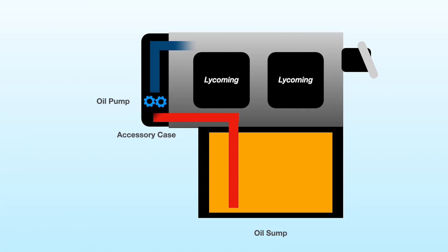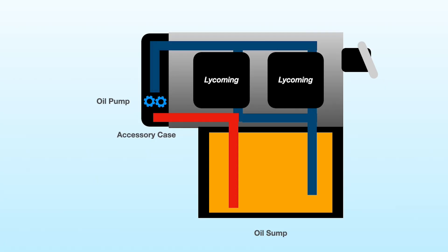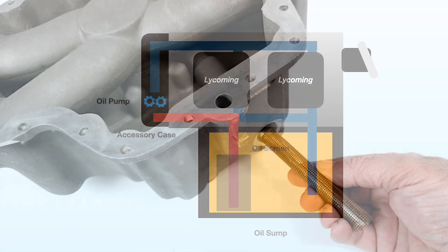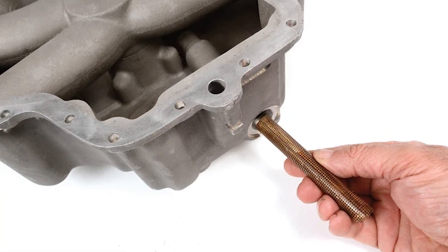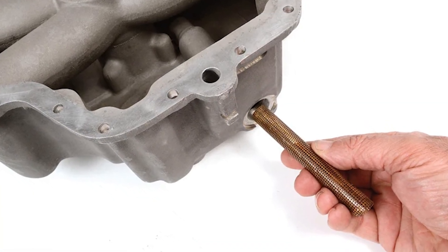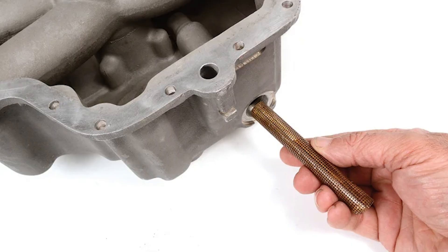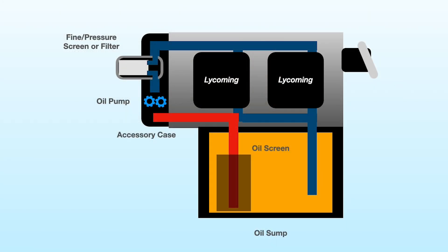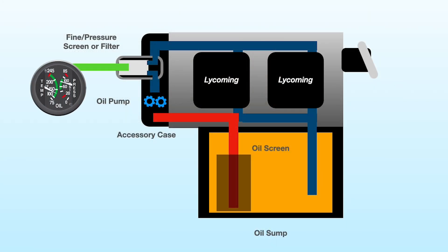For screen-type engines there are always two screens for filtration. The coarse screen is normally housed in the bottom of the oil sump and is designed to prevent large shavings of metal or trash from entering the oil pump. The pressure screen, which is more fine, is typically located on the back of the accessory housing — and it's where oil temperature is sensed on the Cessna 140.